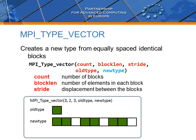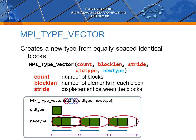We will now have a closer look at the data type constructor routine MPI_Type_vector, which creates a type for data consisting of equally separated blocks. By providing the number of blocks, number of elements in each block, the element separation, and the type of these elements, the routine will return a handle to the corresponding data type. For example, the picture here describes a data structure consisting of three blocks, each having two elements, and the starting points of the blocks are separated by three elements. Note that nothing prevents the use of nested data types — the old type argument does not necessarily have to be an elementary data type.